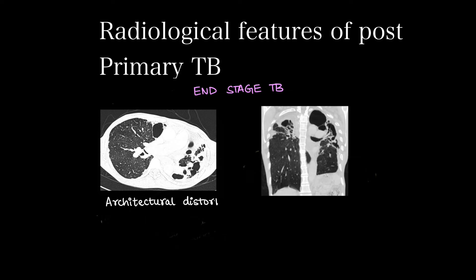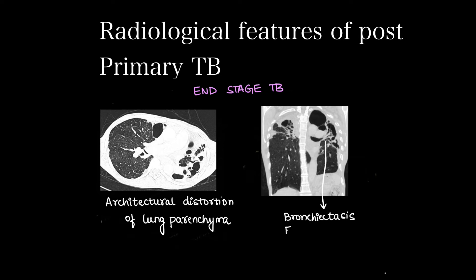End stage tuberculosis shows architectural distortion of the whole lung parenchyma. Other changes include bronchiectasis, fibrosis, and collapse.